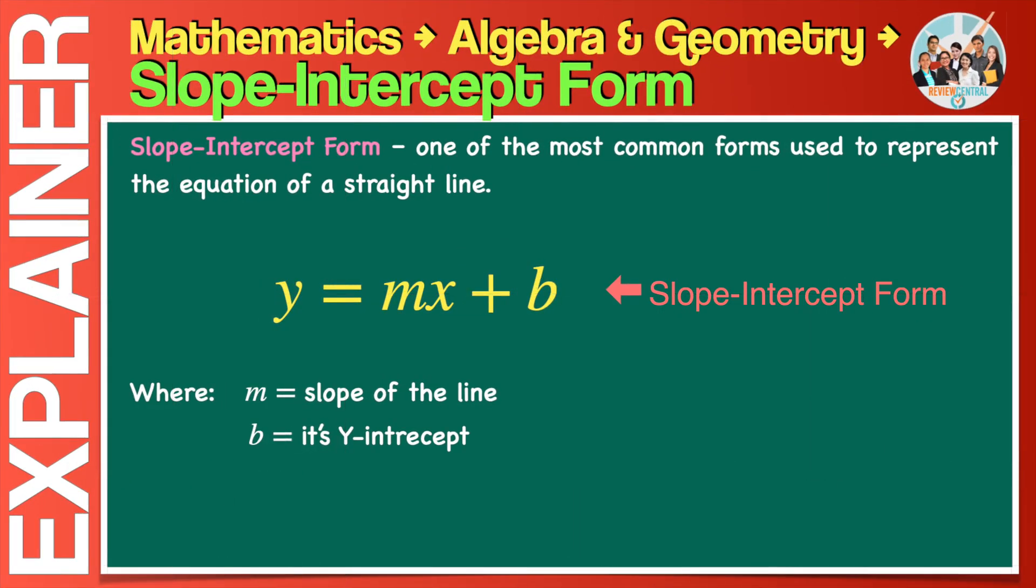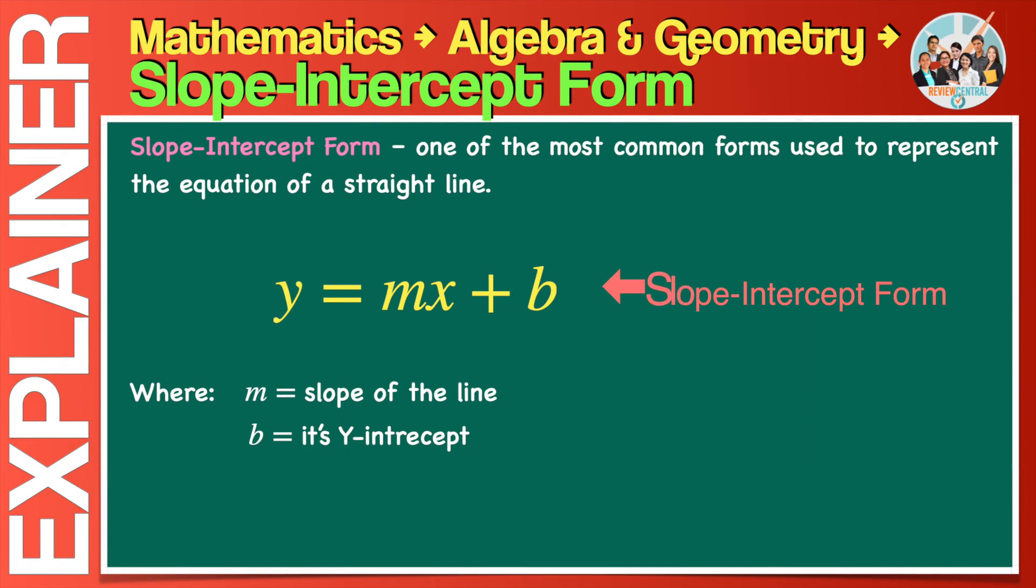The slope-intercept form of a straight line is one of the most common forms used to represent the equation of a line. The standard form of the equation is where one side contains just y, so it will look like y equals mx plus b, where m is the value of the line slope and b is the line's y-intercept.